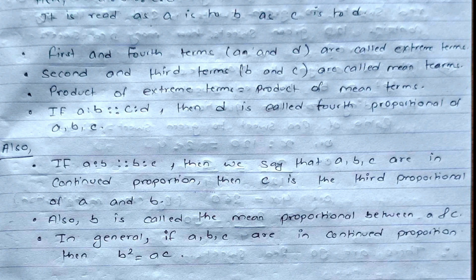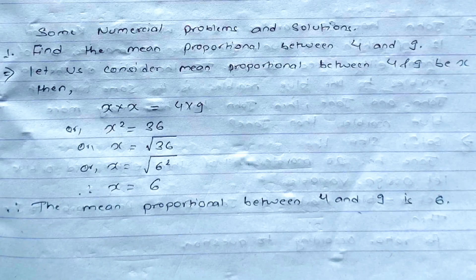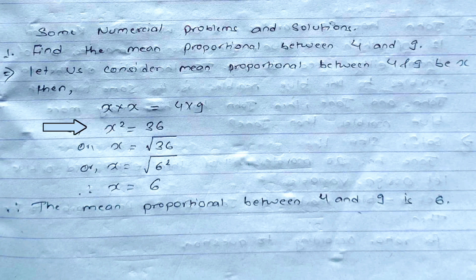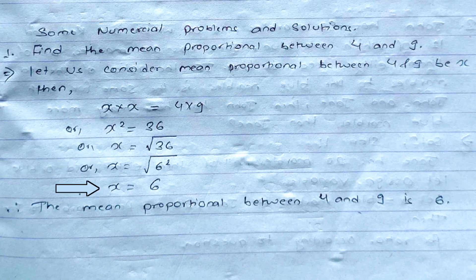The first question: find the mean proportional between 4 and 9. We consider the mean proportional to be x. Using the formula b squared equals a times c, we get x times x equals 4 times 9, so x squared equals 36. Taking the square root of both sides, x equals the square root of 36, which equals 6. Therefore, the mean proportional between 4 and 9 is 6.